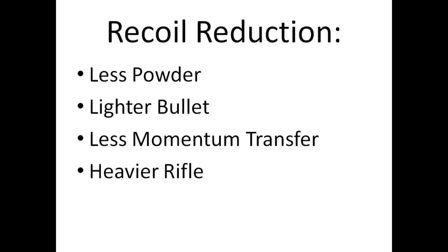The last option is a heavier rifle. Mercury plugs in the stock are one way people add weight — you can buy those. Jack O'Connor's older writing talks about wanting heavy-kicking cartridges in a heavy rifle. A bigger, heavier rifle is harder to carry around, but it won't kick as much.